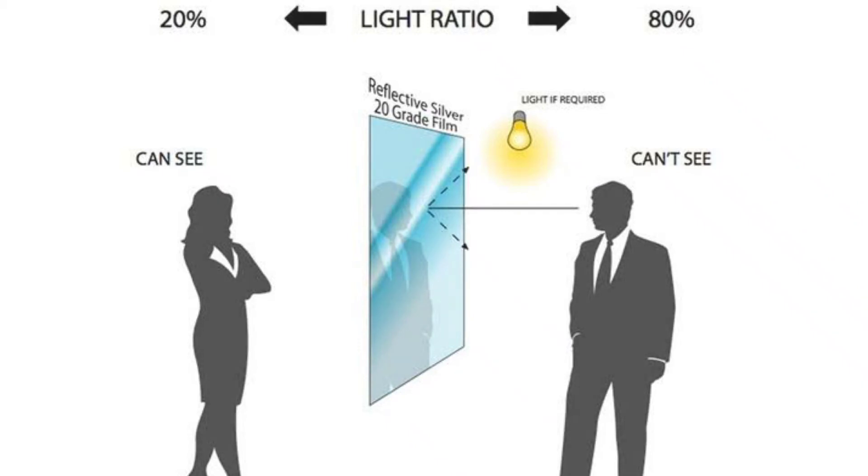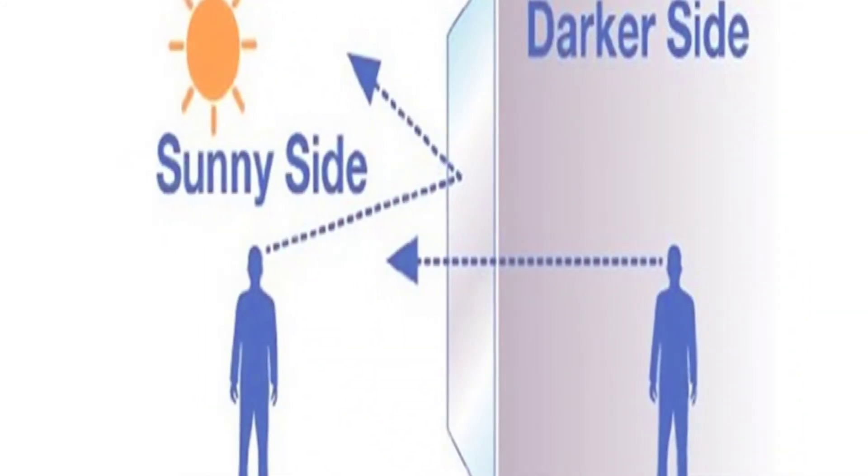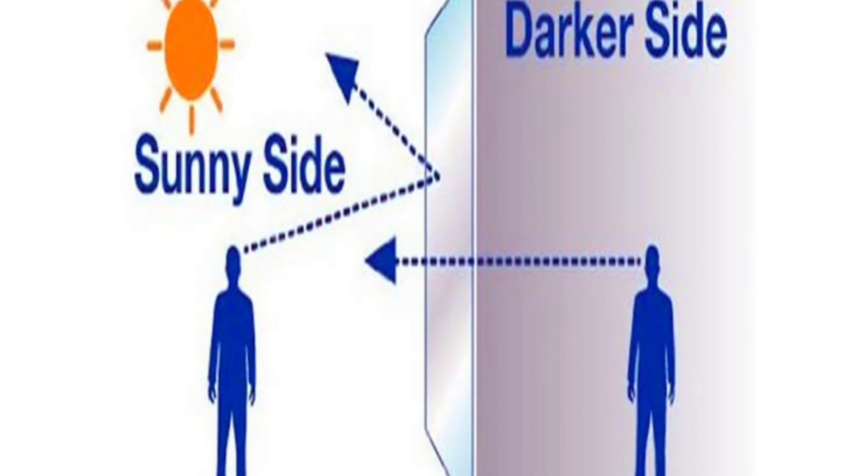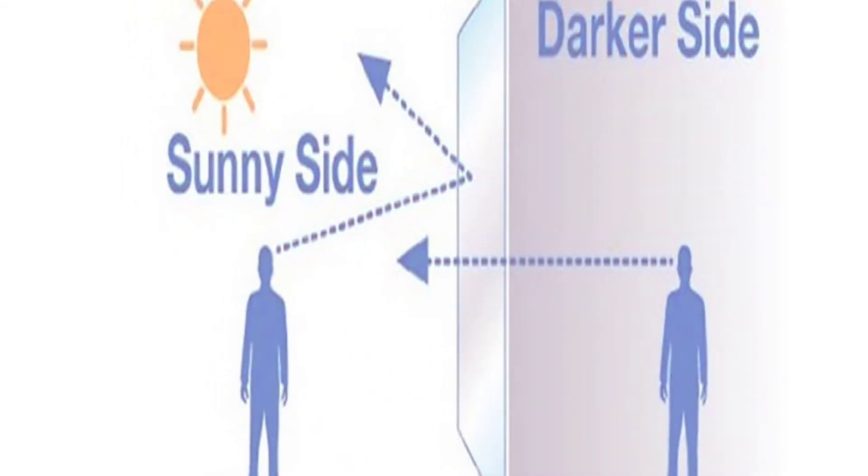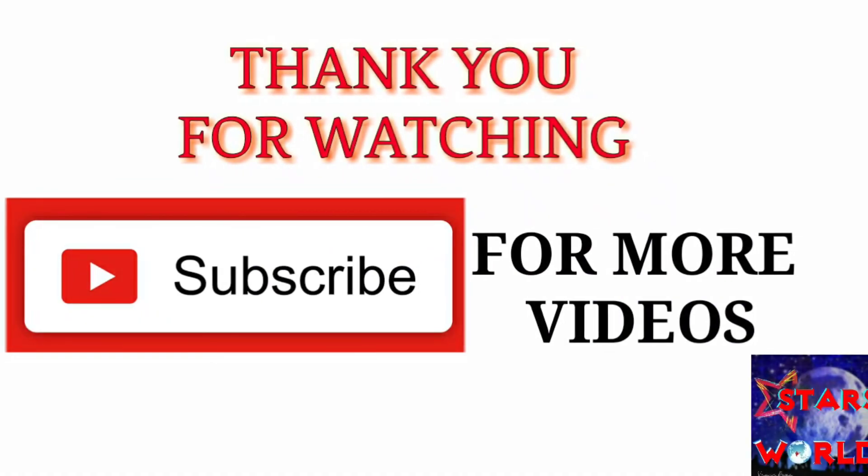In order for one way mirrors to work effectively, one side of the mirror must be brightly lit and the other side must be dim or dark. This is the main reason. I hope you understand. Thank you for watching.